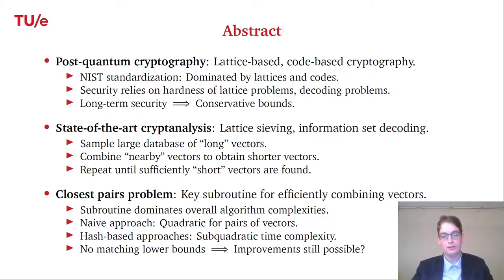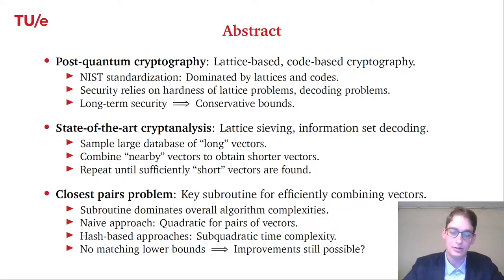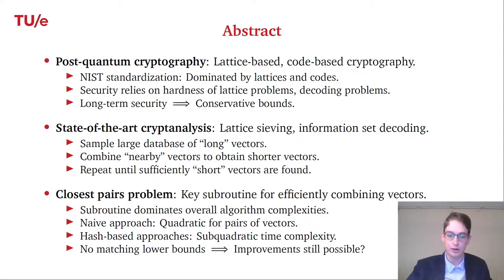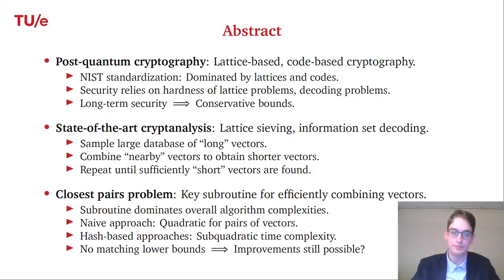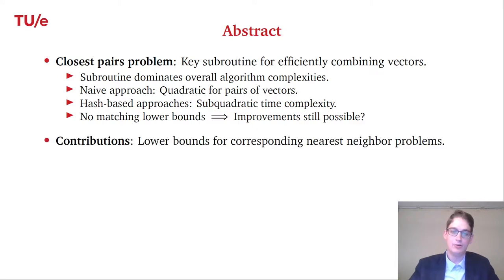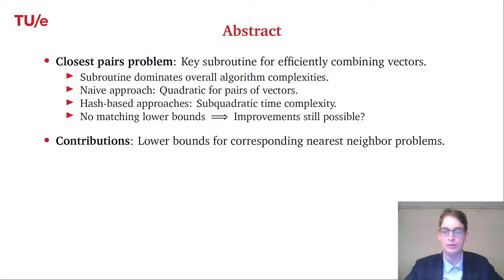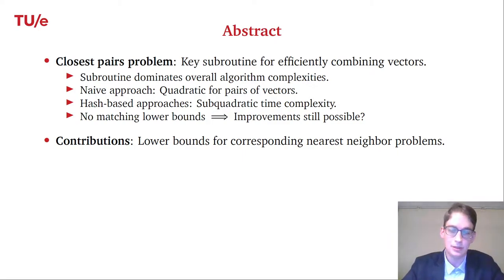Right now there are no matching lower bounds, neither for the lattice sieving nor for the information set decoding setting. So improvements may still be possible, which is problematic if we want to choose parameters now — if someone comes up with further improvements in 10 years, that would be a problem. The main contribution of this paper is to study lower bounds for the corresponding nearest neighbor problems.